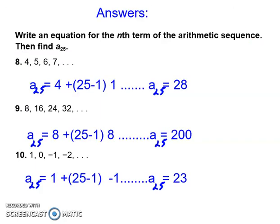Alright. So here are the answers. For number 8, you should get 28. For number 9, you should get 200. And number 10, you should get 23. I've written out what the equation would look like. But everything is there for you. You're doing so well. If you have any questions, please feel free to reach out. But great job, folks. Have a great day. Thank you.